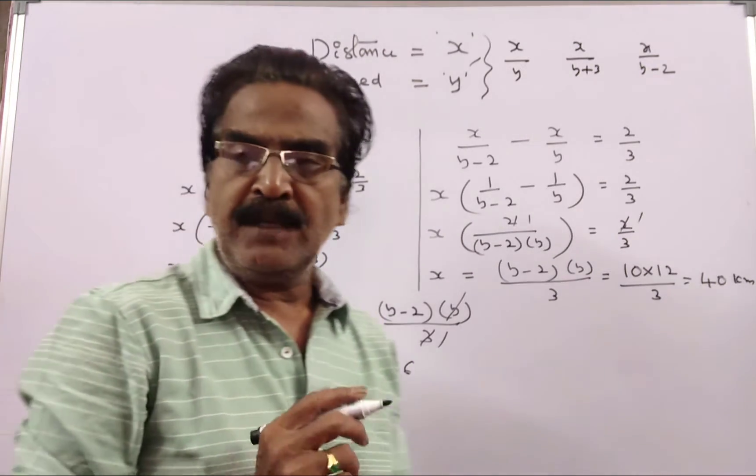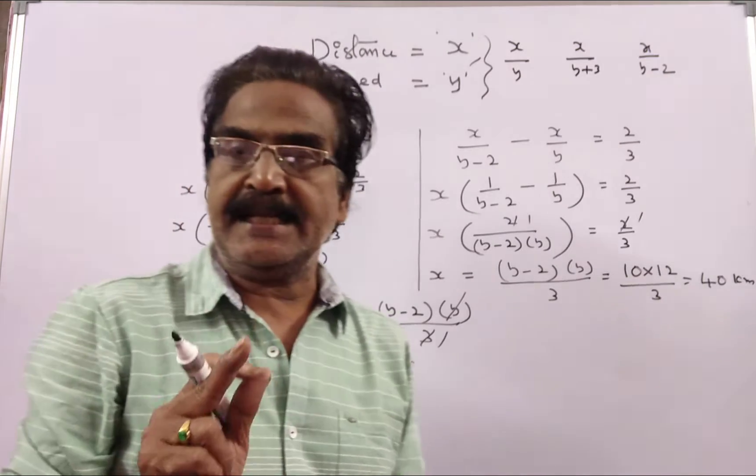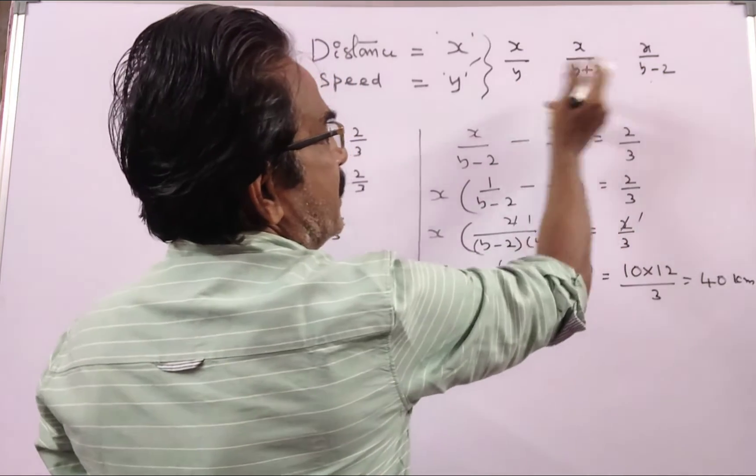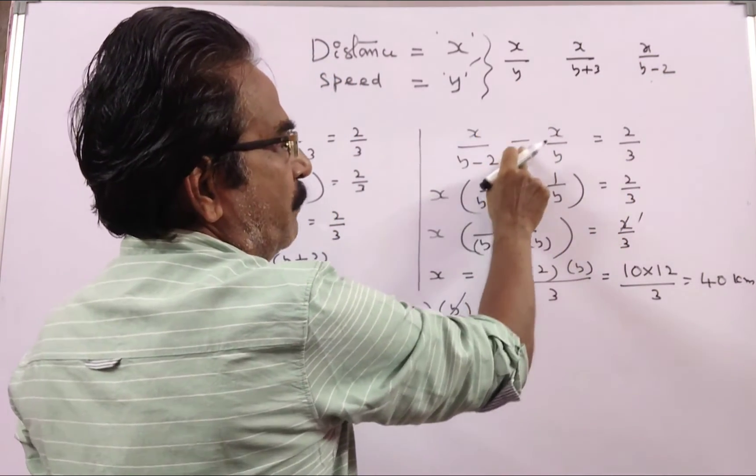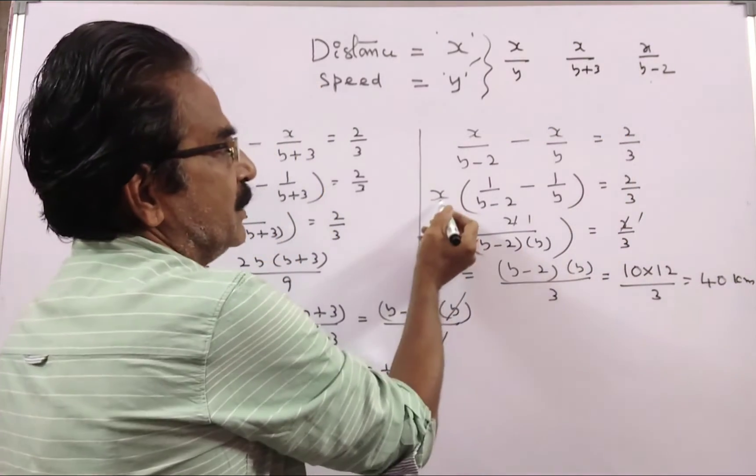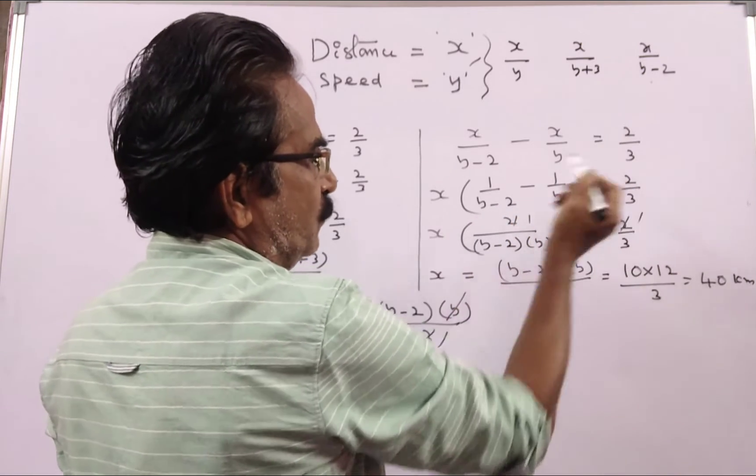Coming to case 2, if he moves at 2 kmh slower, then it takes him 40 minutes more. So this minus this, this time minus this time, that is x by y minus 2 minus x by y is equal to 2 by 3. So x into 1 by y minus 2 minus 1 by y is equal to 2 by 3.